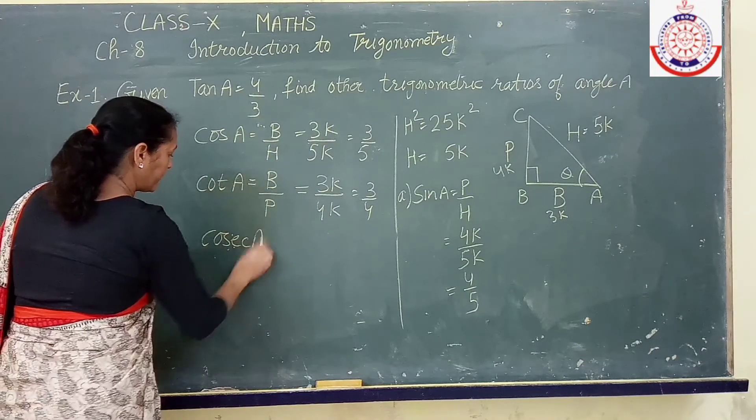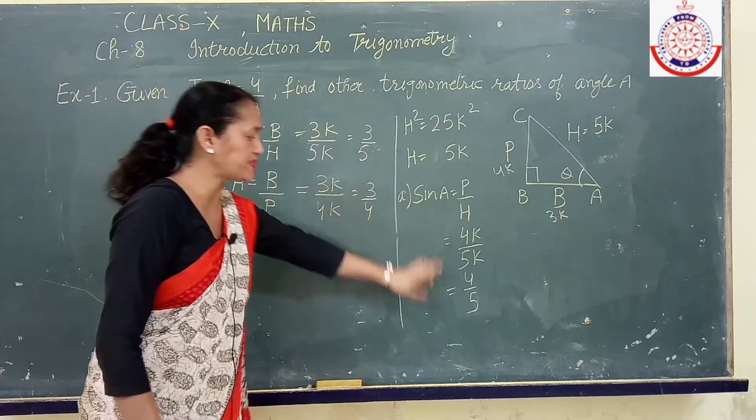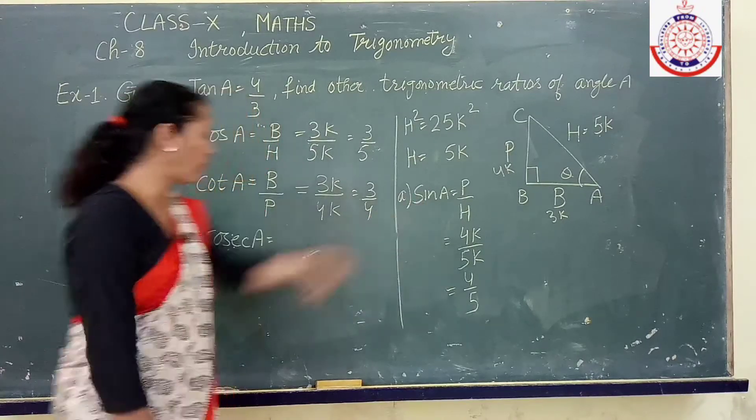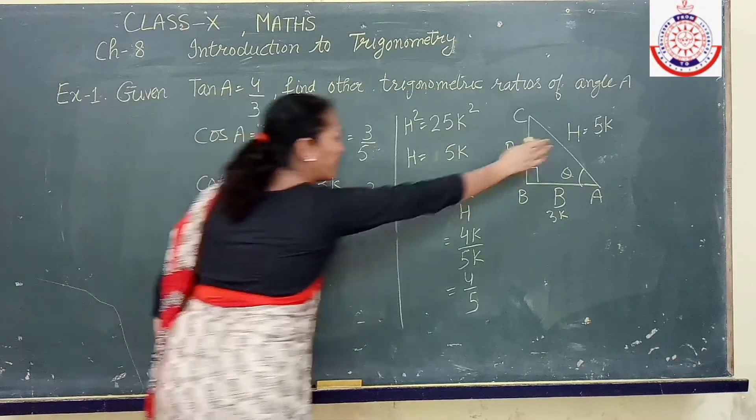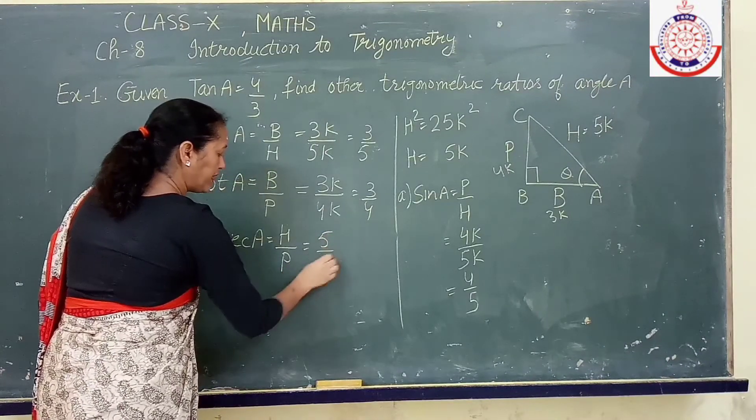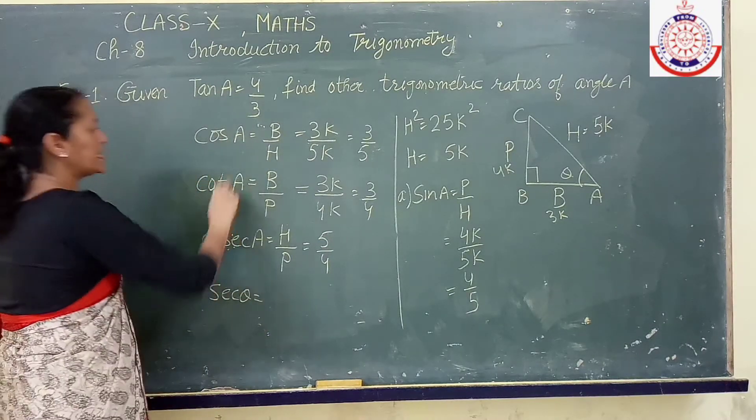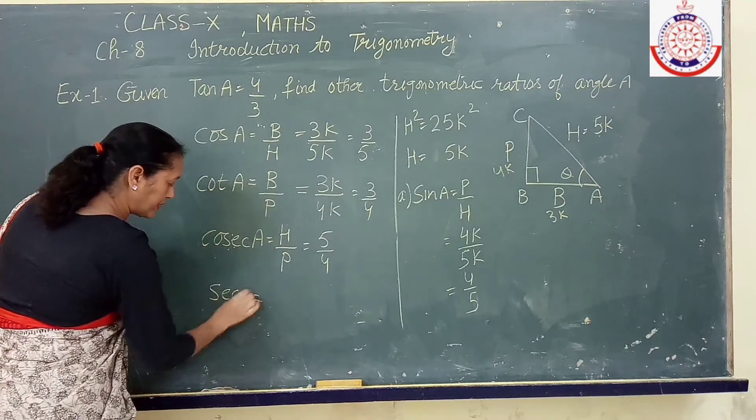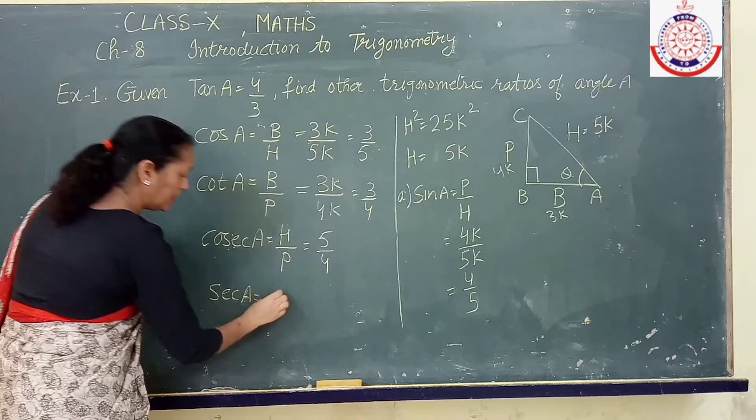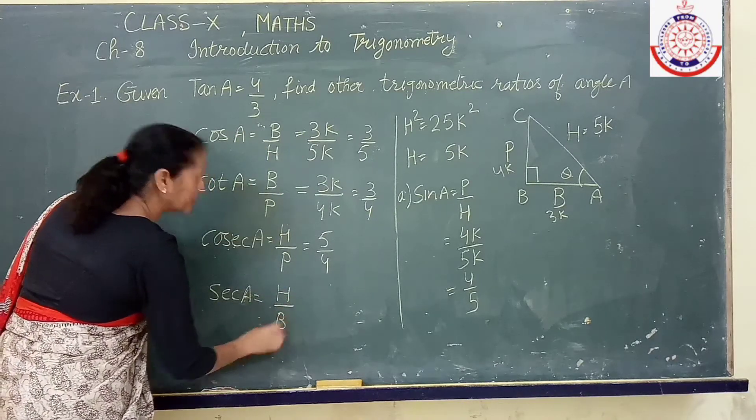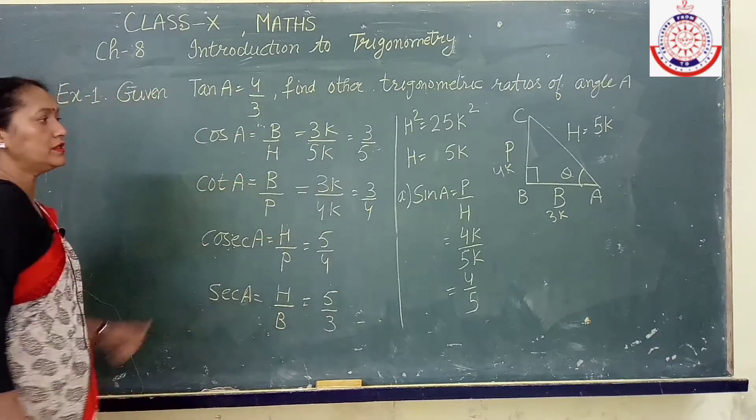Cosecant. Cosecant is either you can say cosecant is reciprocal of sine you will get your value, or through the formula it will be hypotenuse upon perpendicular. So 5k upon 4k, value would be 5 upon 4. Then comes the turn of secant theta. Secant theta either as reciprocal of cos or by the formula we will be getting hypotenuse upon base, that is 5 upon 3. So we have obtained all the T ratios.